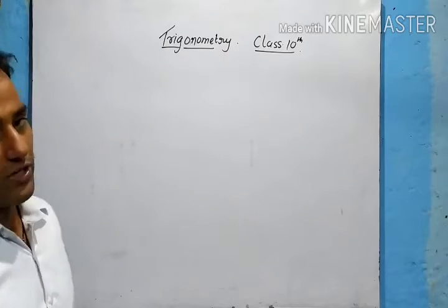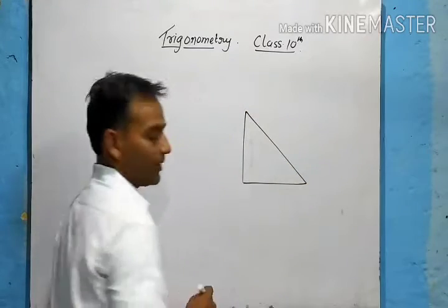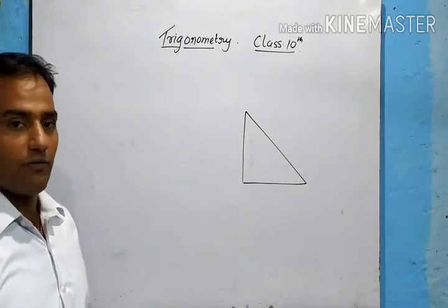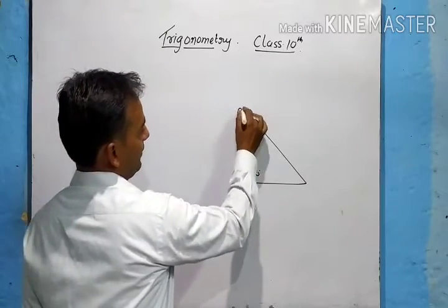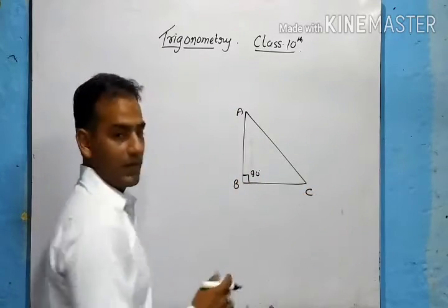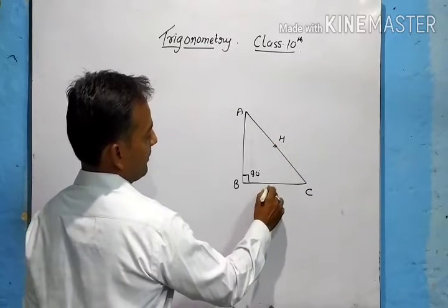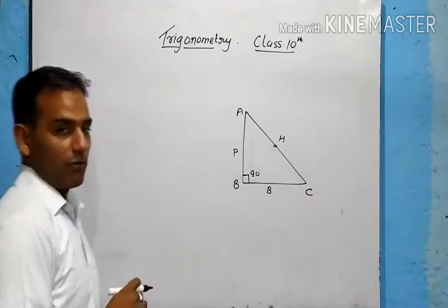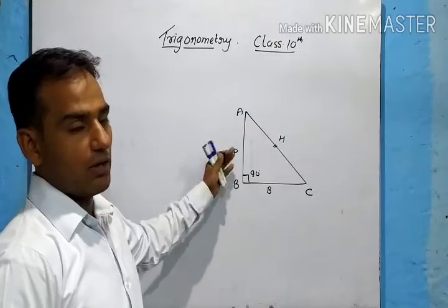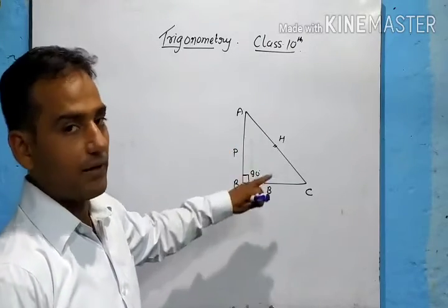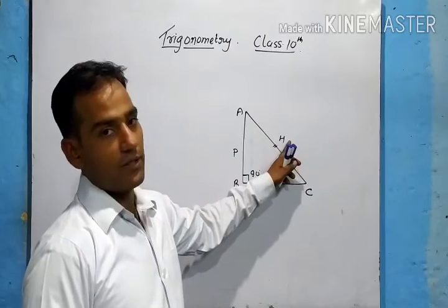Before we start trigonometry, we need to know about the right angle triangle. A right angle triangle is a triangle in which one angle is 90 degrees. In triangle ABC, if it is a right angle triangle, then in front of the 90 degree angle we have the hypotenuse. One side will be the perpendicular and one will be the base. The position of the hypotenuse is fixed — it is always opposite the 90 degree angle.